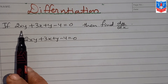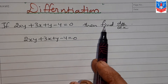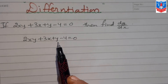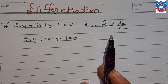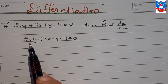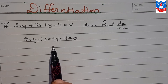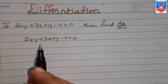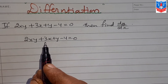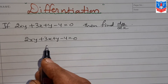The question is: if 2xy + 3x + y - 4 = 0, then find dy/dx. Up till now the sums we did had y expressed in terms of x. Here, in this equation, you can see x and y values are given together. In that case, how to solve? We take y values on one side and x values and constant values on the other side.